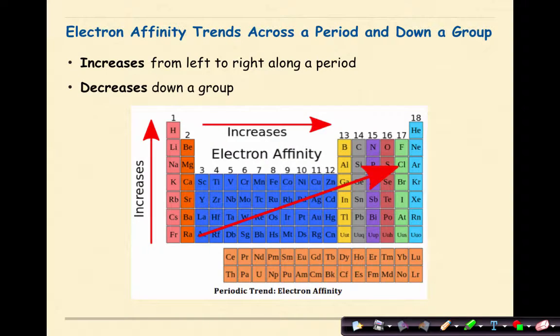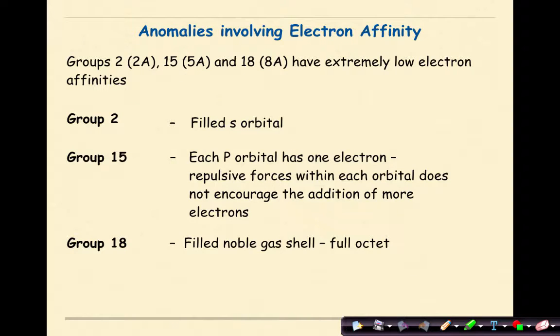The general trend of electron affinity is that it increases from left to right across a period, which makes sense as metals typically will not gain electrons, but nonmetals will gain electrons to get their full octet. It decreases down a group. Anomalies involving electron affinity: